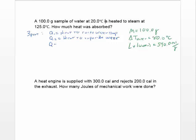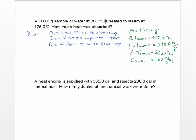Q3 is the heat to raise the steam temperature. We've converted water to steam and now need to raise its temperature by 25°C. We also need the specific heats: C_water = 1.00 cal/g·°C and C_steam = 0.480 cal/g·°C. We need all of those numbers to work this problem.